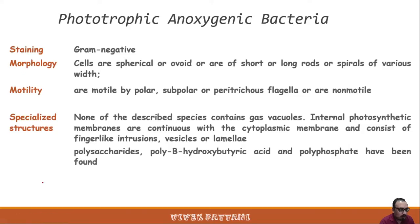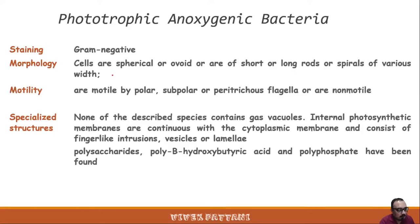Moving forward with the next group: phototrophic bacteria, specifically phototrophic anoxygenic bacteria, which are divided into four groups: green sulfur bacteria, green non-sulfur bacteria, purple sulfur bacteria, and purple non-sulfur bacteria.